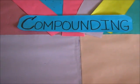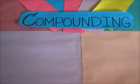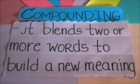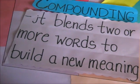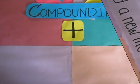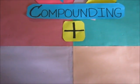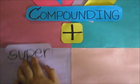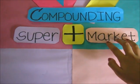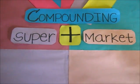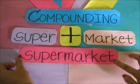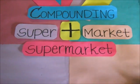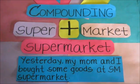Let's have compounding. These are compound words that may be written as one word or as two words joined with a hyphen, and it blends two or more words to build a new meaning. Let's have samples of compounding. Here we have two words: 'super' plus 'market.' When we join them together, we have 'supermarket.'